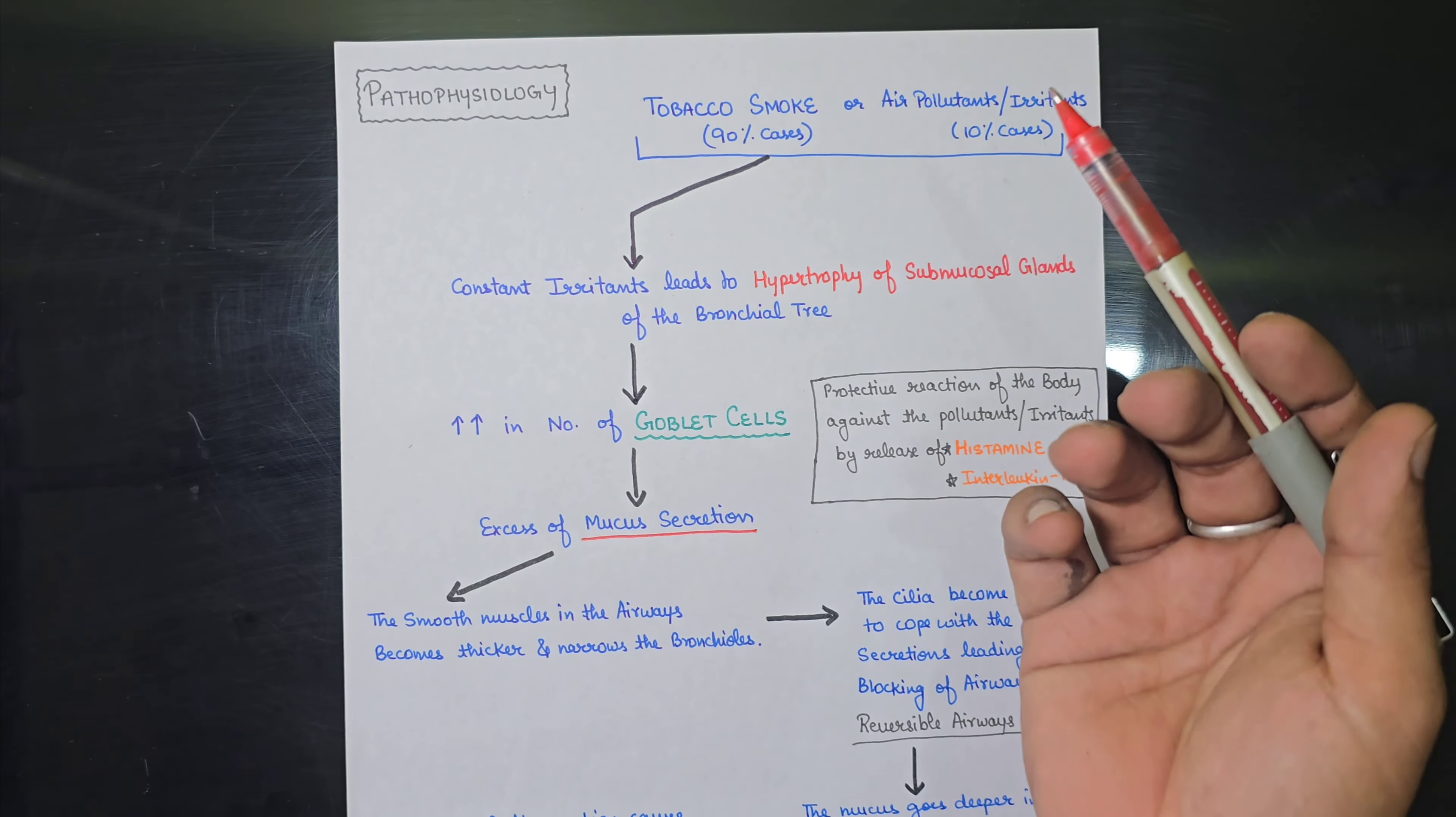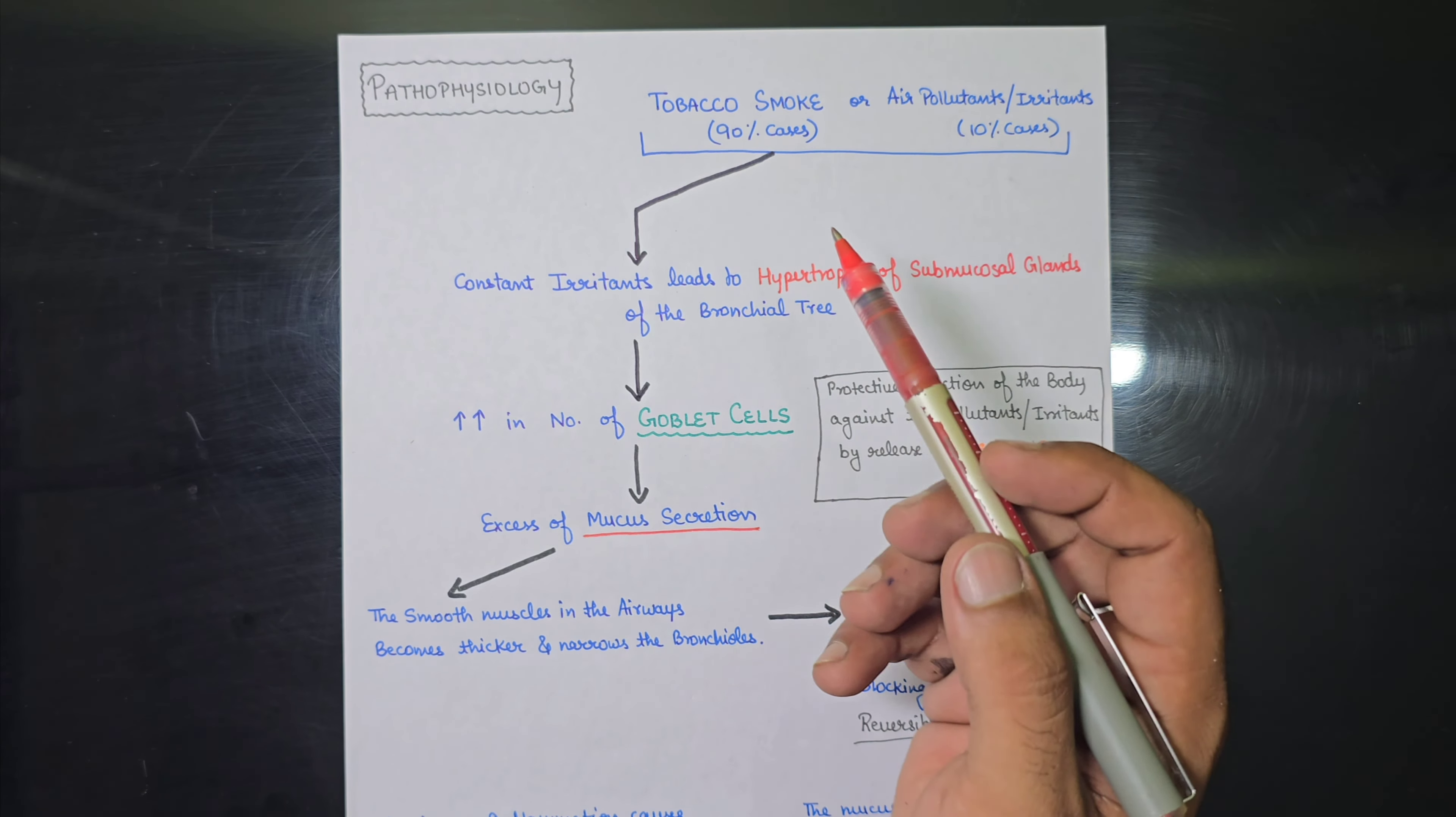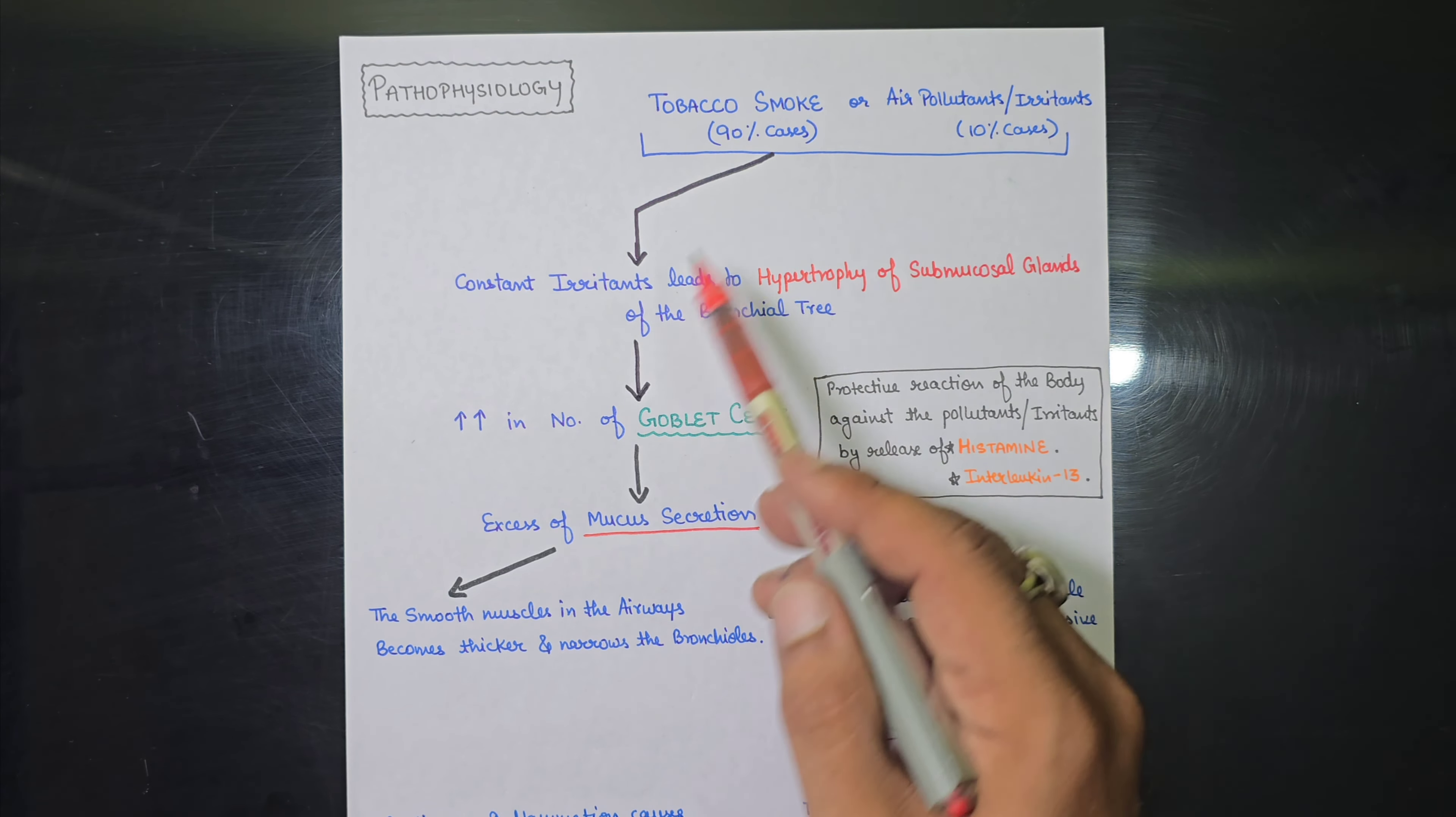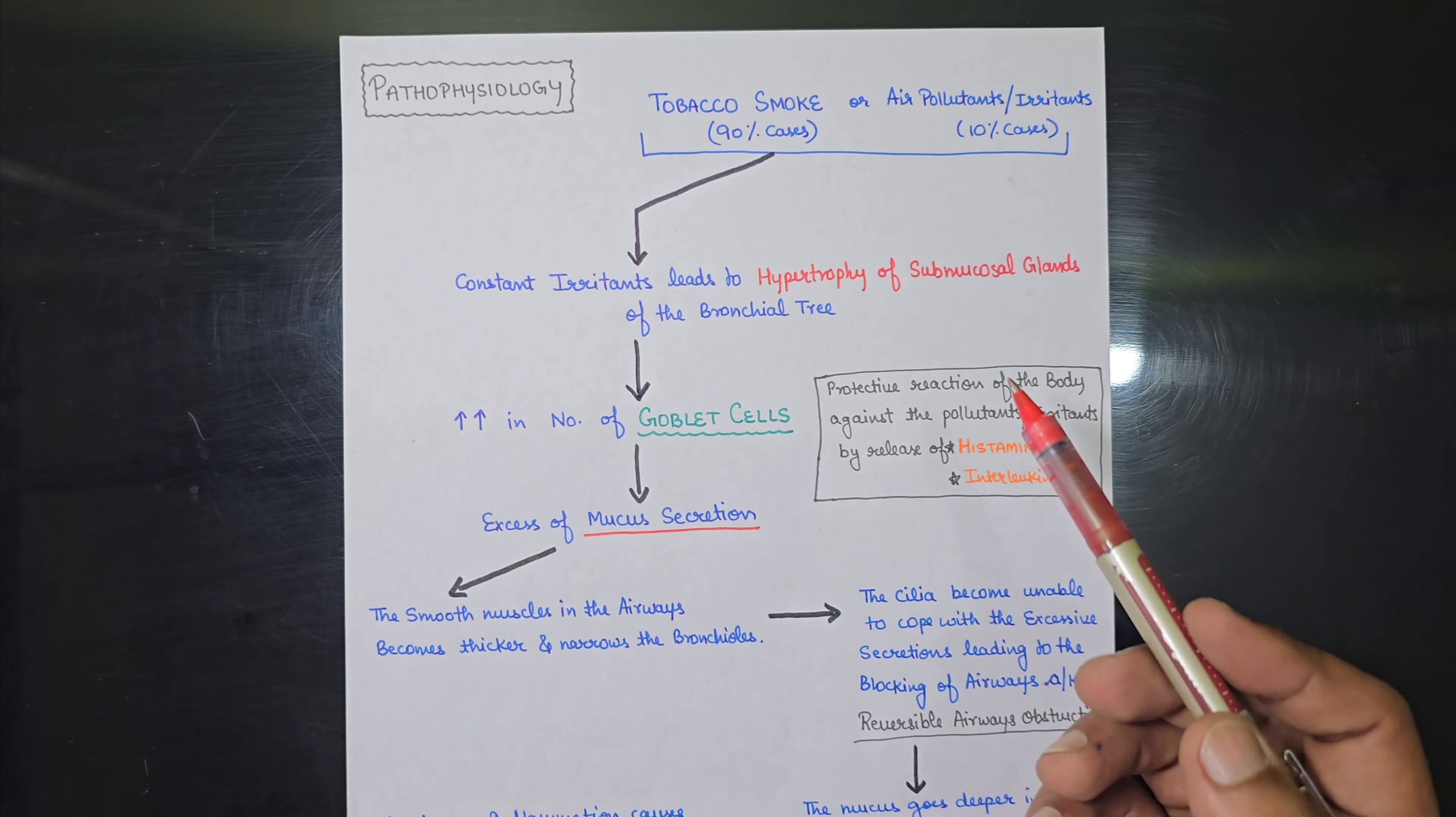So what does this kind of thing do? The constant irritants from the tobacco smoke leads to the hypertrophy of the submucosal gland of the bronchial tree.